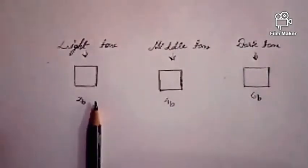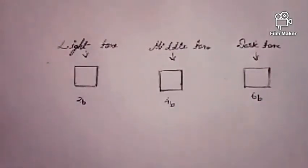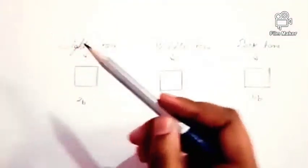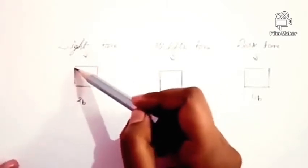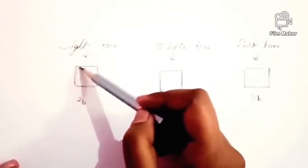In that box where you can see 2B pencil is there, I will fill that box with light shading. That means 2B pencil is for light shading.